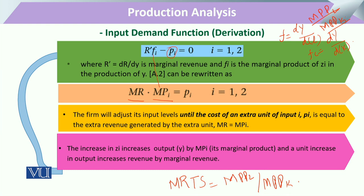The firm adjusts its input level up to the point where the cost of an extra unit of input — represented by pi — is just equal to the extra revenue generated by that additional unit of output. This is the point where marginal revenue equals marginal cost.